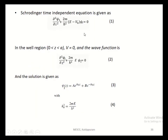The Schrödinger time-independent equation is given as ∂²ψ₁/∂z² + (2m/ℏ²)(E − V₀)ψ₁ = 0. In the well region where V equals zero, the equation becomes ∂²ψ₁/∂z² + (2m/ℏ²)E·ψ₁ = 0. Its solution is ψ₁(z) = A·e^(ik₀z) + B·e^(−ik₀z), where k₀² = 2mE/ℏ².